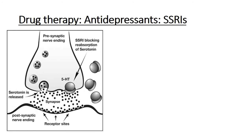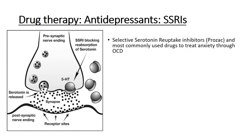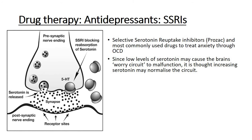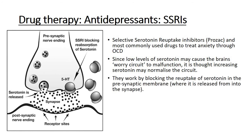Selective serotonin reuptake inhibitors — for example Prozac, that's a very common example — are commonly used drugs to treat anxiety through OCD. Since low levels of serotonin may cause the brain's worry circuit to malfunction, it is thought that increasing serotonin levels may normalise this circuit — in other words, to reduce the levels of anxiety. They work by blocking the reuptake of serotonin in the pre-synaptic membrane where it's released from into the synapse. You can see my cursor — this is our pre-synaptic cell, zooming right into brain structures within the brain in that worry circuit. In a patient with OCD, they would tend to have much lower concentration of serotonin being released into the synapse to have its calming effect on the worry circuit.